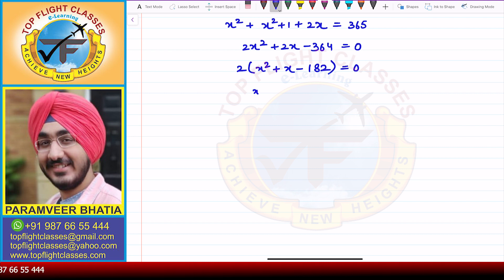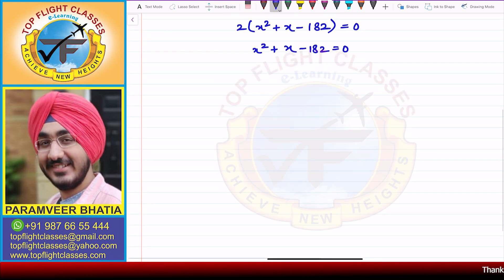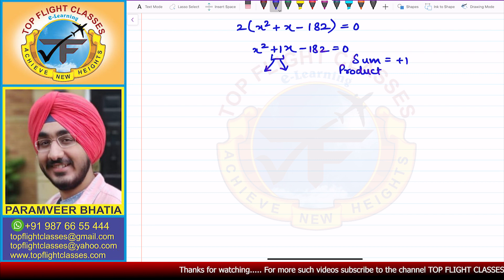So here, we got x square plus x minus 182 is equal to 0. Now this is the equation that we get. Now again, we will solve this by using the splitting of the middle term. Here is plus 1. We have to split it in two numbers. So our sum, that is plus 1 and the product is equal to 1 into minus 182, which is minus 182.